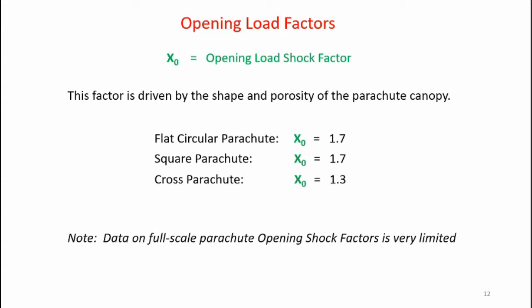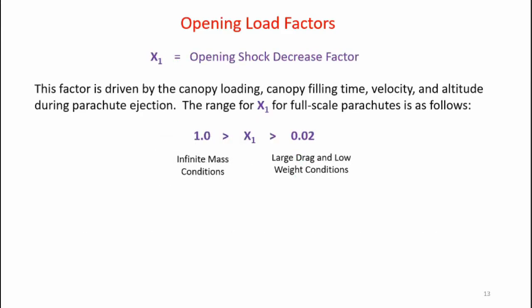Factors x-sub-zero and x-sub-one are determined experimentally. x-sub-zero, the opening load shock factor, is driven by the shape and porosity of the parachute canopy. Here are some x-sub-zero values for various parachute shapes: flat circular and square have an x-sub-zero of 1.7, and the cross parachute has a slightly smaller x-sub-zero at 1.3. x-sub-one, the opening shock decrease factor, is driven by canopy loading, canopy filling time, velocity, and altitude during parachute ejection. x-sub-one ranges from 1.0 down to 0.02. The large value of 1.0 is for infinite mass conditions, while the smaller values are for systems such as large drag and low weight conditions or model rocket deployments.